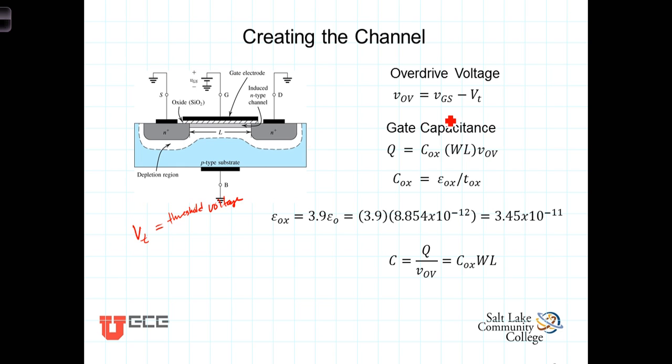Thus, VGS must be greater than VT for the transistor to conduct. Although the mechanisms are different, this is analogous to the case in diodes where similarly a minimal voltage was necessary to move the diode into a conducting state. VT is a function of transistor design and is typically on the order of about 0.3 volts to 1 volt.